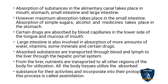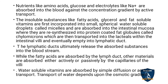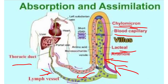Different parts of the digestive tract absorb different substances. The mouth, stomach, intestine, and large intestine all play roles, but maximum absorption occurs in the small intestine. Simple sugars, alcohols, and medicines are absorbed there, and certain drugs are absorbed in the large intestine. Absorbed substances are transported via blood and lymph to the liver.